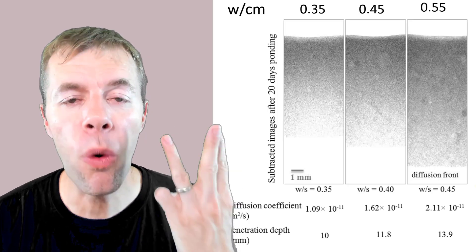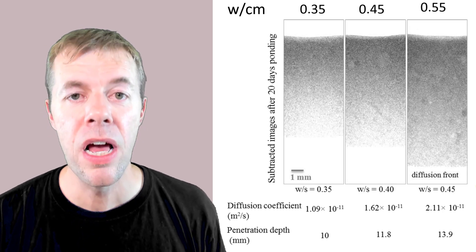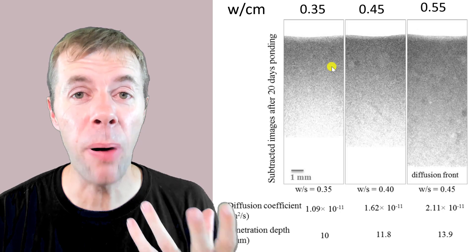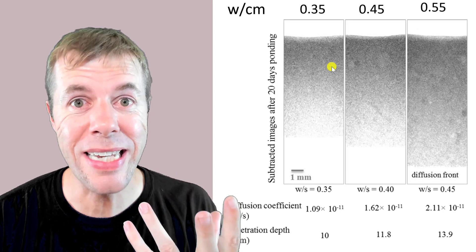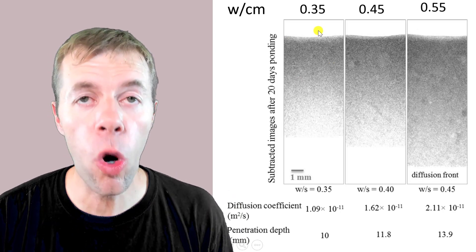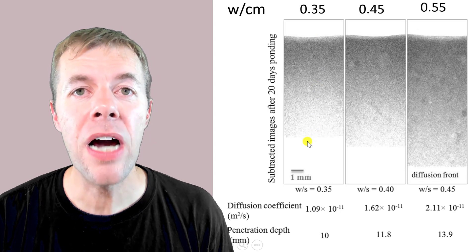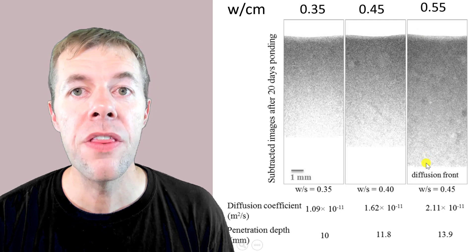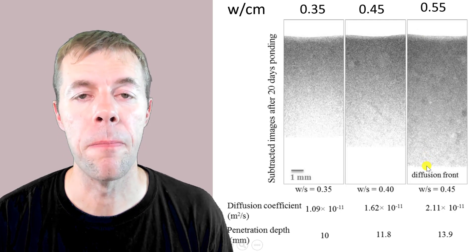Here are three different water to cement ratios. They all have different pore systems. And they've all been ponded for 20 days. And you can see the ones with the lowest water to cement ratio, the ions didn't go as far. And the one with the highest water to cement ratio, the ions went much further.